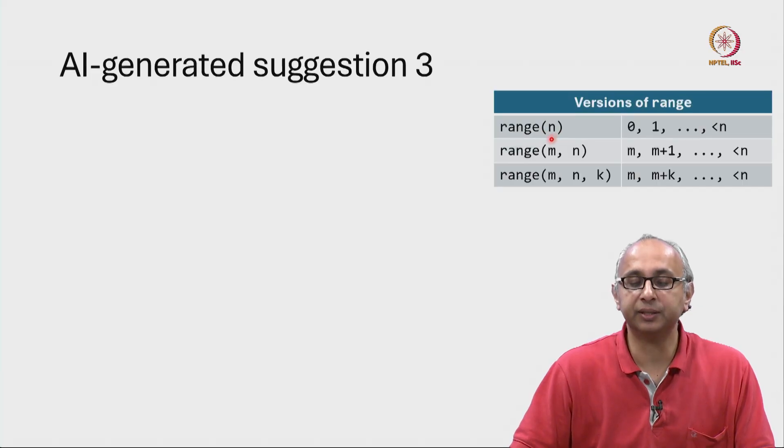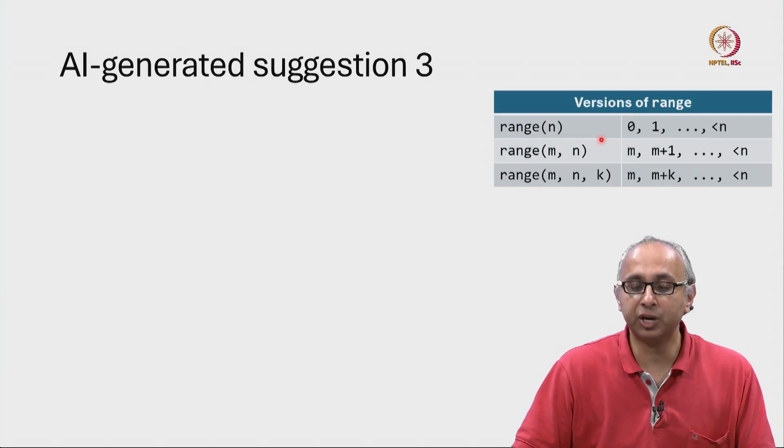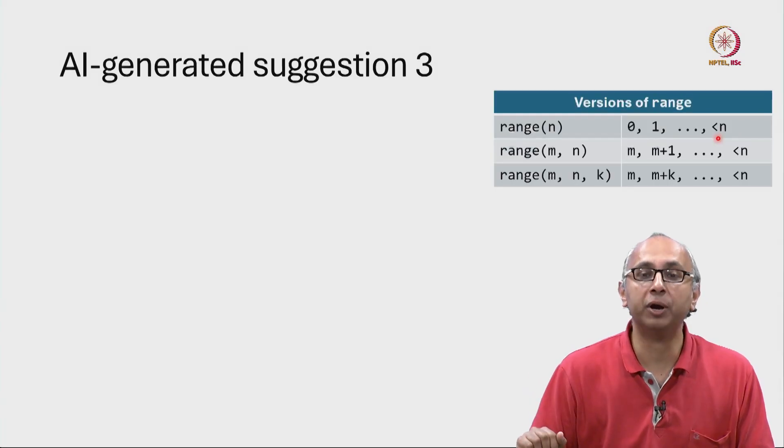We have so far seen this version of the range function where we pass in one argument. And when we say range of n, we know that the values in that range are 0, 1 and so on all the way up to but not including n. So we stop before n.